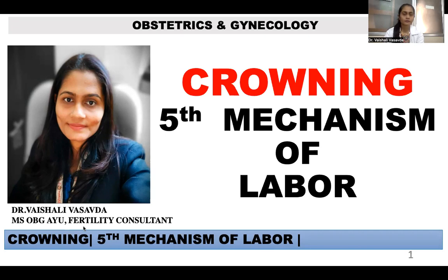we have seen the first, second, third, and fourth mechanism of labour. And before that, the whole labour chapter is based on the definition and its management. We have a detailed description and discussion about it. These are all the links in the description box. If you have to refer to it, you can refer to it, because crowning is a connecting topic with internal rotation. That's why you have to understand the previous mechanisms of crowning. You can see the links in the description.